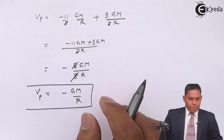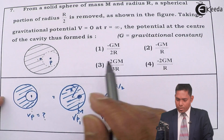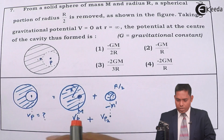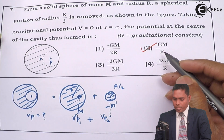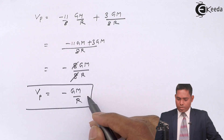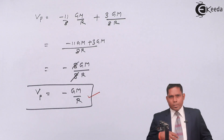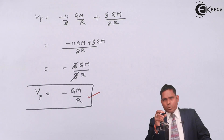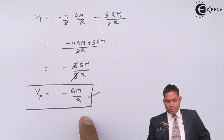Looking at the options, option number 2 is −GM/R, and that matches our result. So that is how you find the potential at an interior point of a solid sphere when a certain amount of mass in the form of a sphere is removed. Thank you.